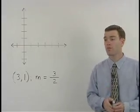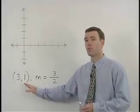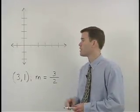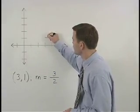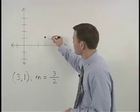We would start things off by plotting our point (3,1). So we go over 3 and up 1 and call that point A.